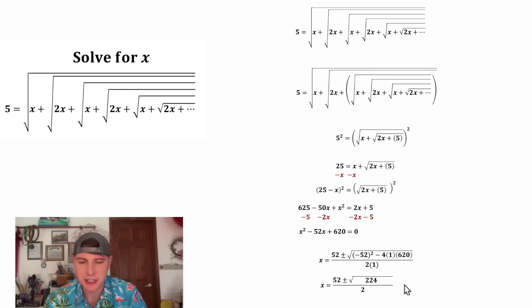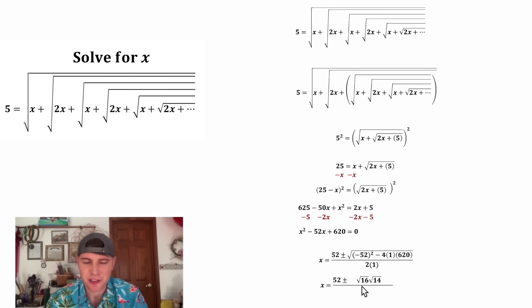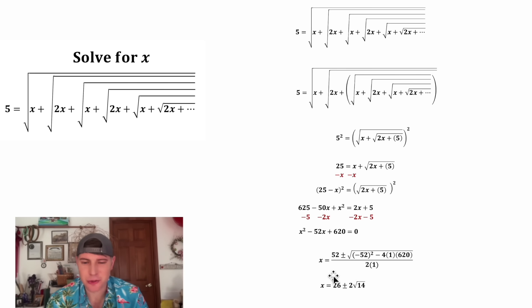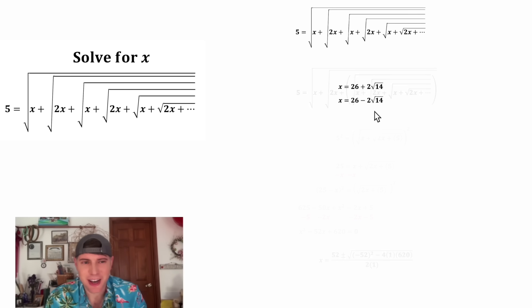224 can be split into 16 times 14. Since they're both inside the square root, they can each get their own square roots, and the square root of 16 is 4. Everything is being divided by 2: 52 divided by 2 is 26, and 4√14 divided by 2 is 2√14. So now we have x equals 26 plus or minus 2√14. Since we have a plus-minus, there are two possible answers for x.